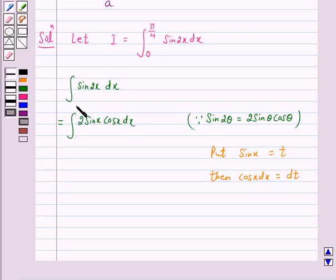So the integral of 2 sin x cos x dx equals integral of 2t dt, and this equals 2t²/2.